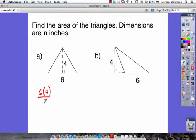Divide by 2. 6 times 4 is 24. Half of 24 is 12, so we get 12 square inches. You can write square inches or inches to the second power, whichever you prefer.